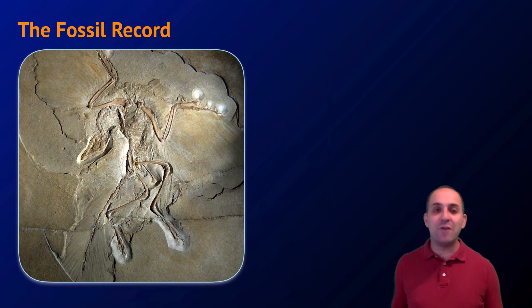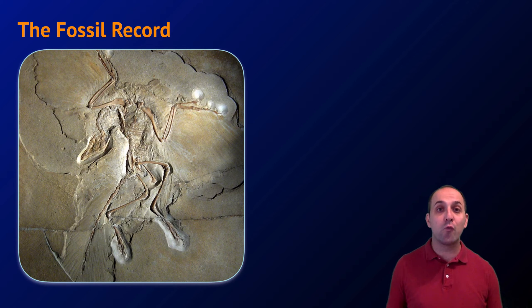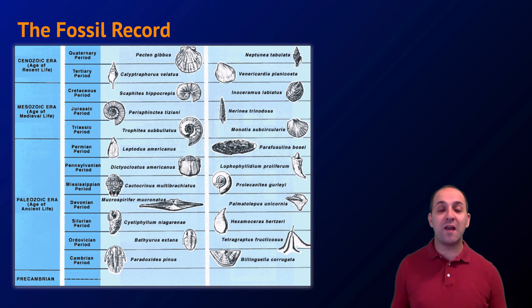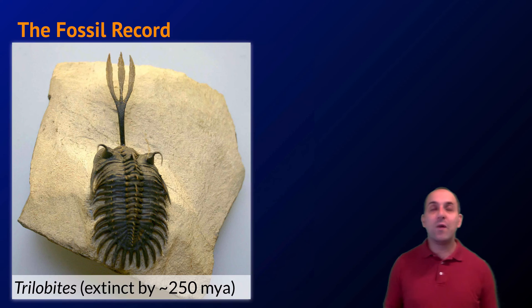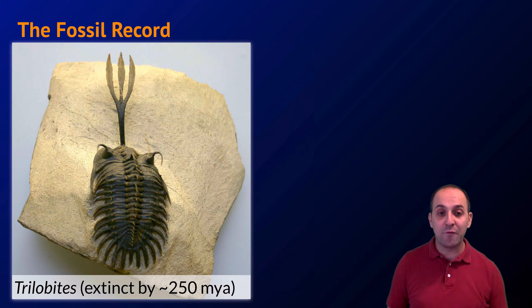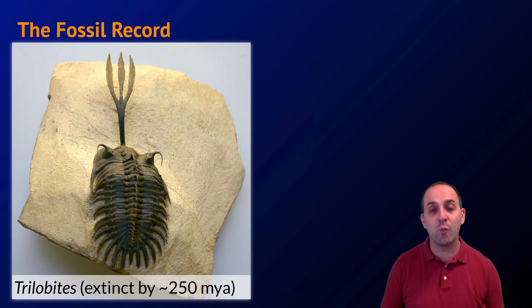Another major source of evidence for evolution is the fossil record. The fossil record is useful because it helps us see the evolutionary history of organisms on Earth throughout geological time. We can see the progressions that have occurred as organisms evolved and diversified over billions of years of Earth's history. We can see ancestral forms of organisms no longer present on the modern Earth — for instance trilobites, ancestors of modern arthropods that have been extinct for about 250 million years but are numerous in the fossil record.